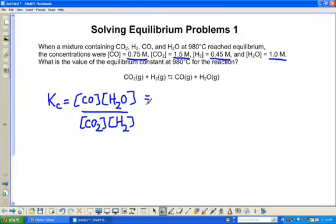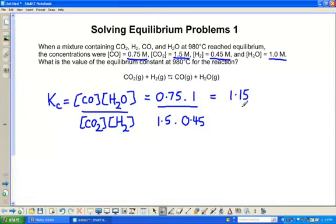And then, literally, all we've got to do is make sure that we put the right number in the right place. So our concentration of carbon monoxide is 0.75 molar. The concentration of H2O is 1 molar. The concentration of CO2 is 1.5 molar. The concentration of H2 is 0.55 molar. Now, what that gives us is 0.75 molar. This is actually 0.6525, which overall gives us a KC value of 1.15.